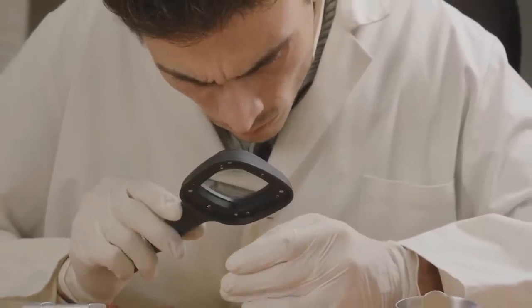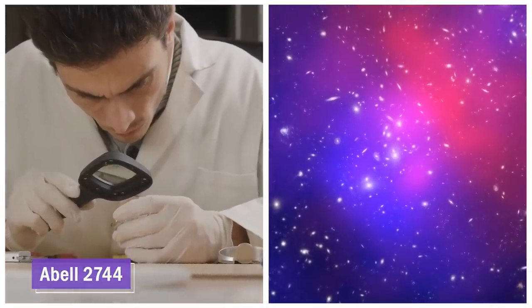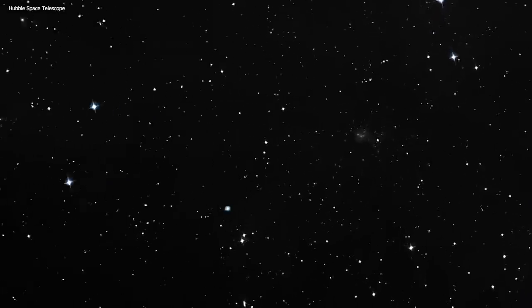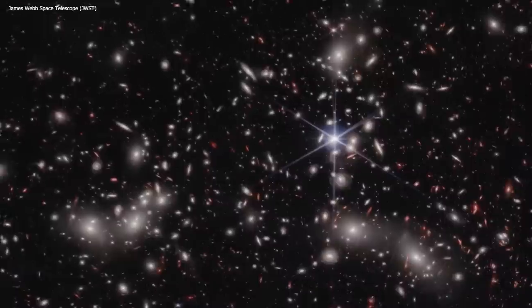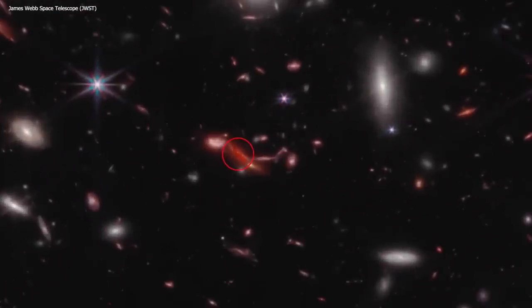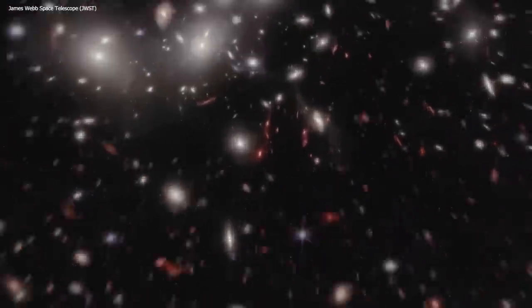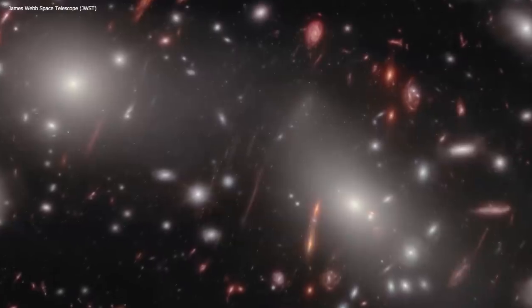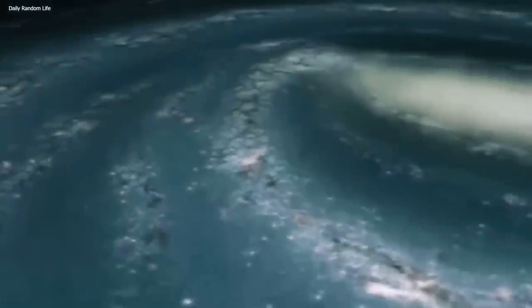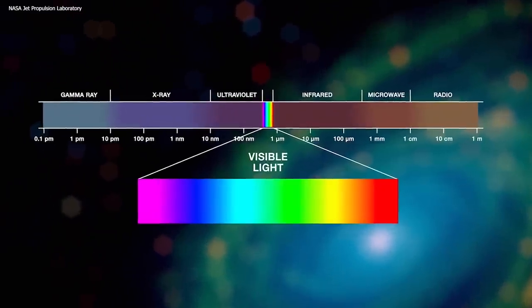In this case, one of these magnifying glasses is Abel 2744, also known as Pandora's cluster. This cluster is located about a staggering 3.5 billion light years away. Now, the JWST images of Abel 2744 revealed two seemingly insignificant little red dots among a sea of hundreds of other galaxies. But these red dots were anything but insignificant. They indicated that these galaxies were extremely far away and that their light had been stretched by the expansion of the universe into the infrared part of the spectrum.